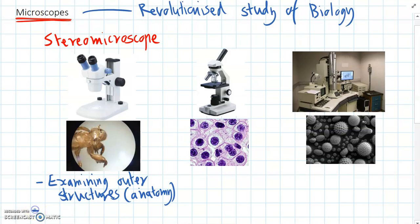And stereomicroscopes, they magnify images by about 200 times. So they zoom in by 200 times.